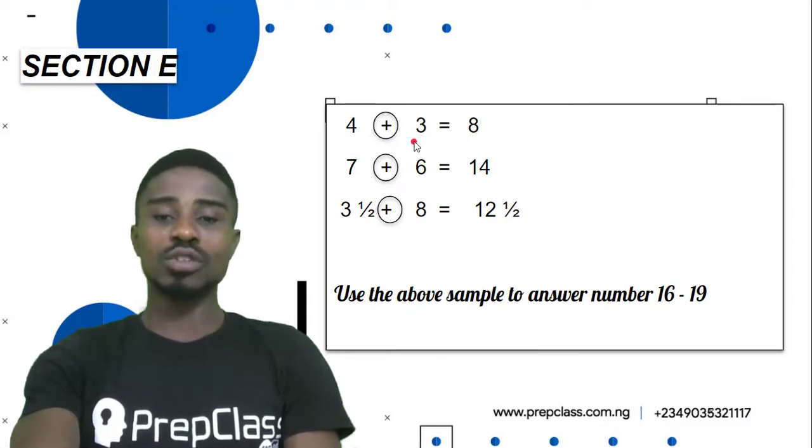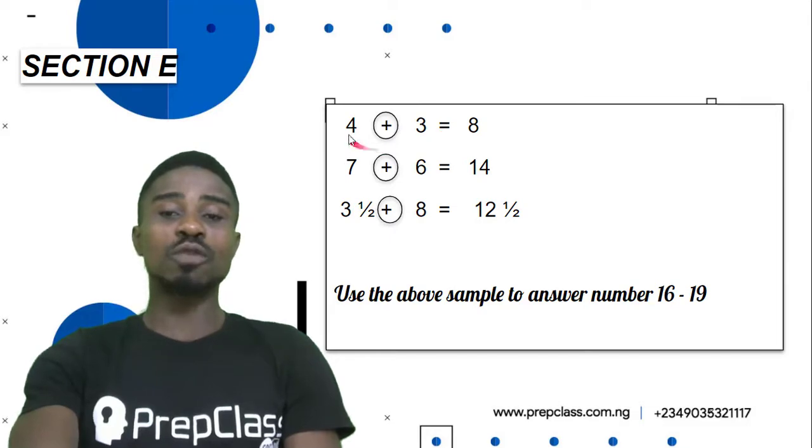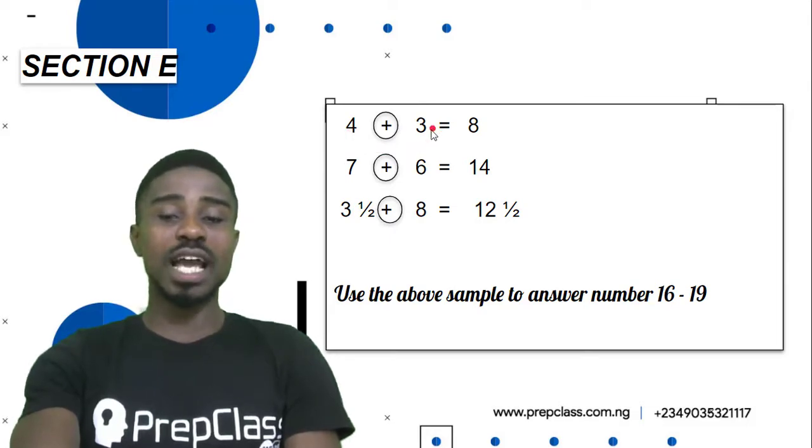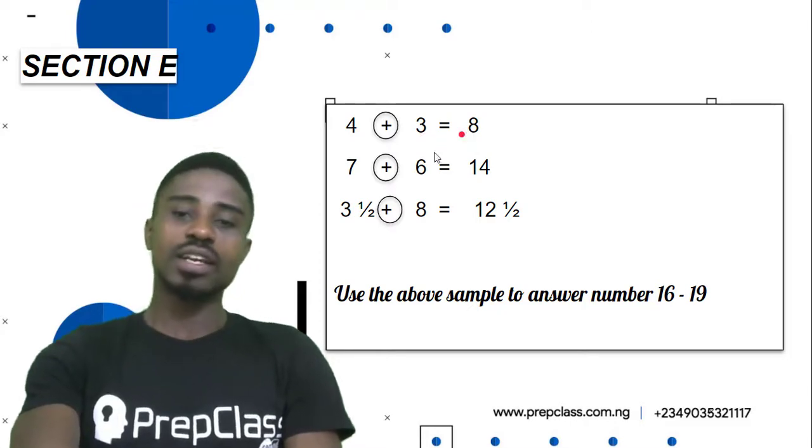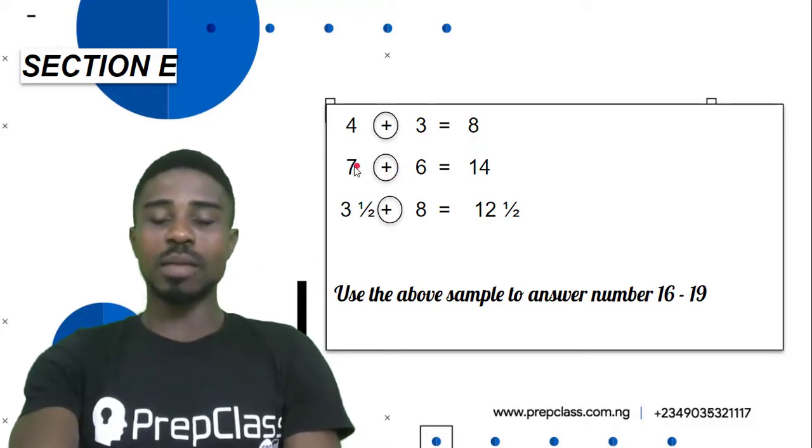So what do I mean by that? If I had on this side maybe a bracket 3 plus 2, it is going to be 3 plus 2 will give us 5. Then it will be 4 plus 5 which is 9 then plus 2, because there are 2 numbers on this other side. But since we just have only one number on this side, it will be 4 plus the number which is 7 then plus 1 which will give us 8.